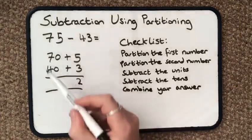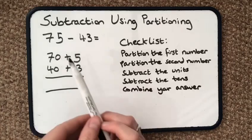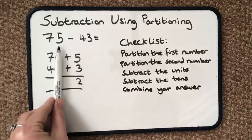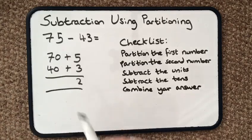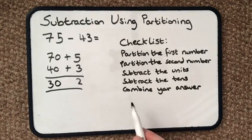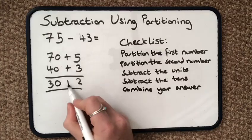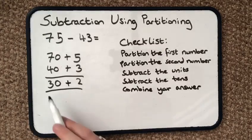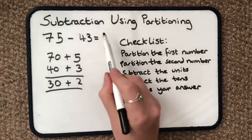Subtract the tens. 70 take away 40, or if I want to make it a little bit easier, I can ignore those zeros there and imagine that says 7 tens take away 4 tens, which I know is 3 tens. But I must make sure that I know it's 30. And it says combine your answer. I'm not adding, I'm just combining them. So it's 30 and 2. So the answer is 32.